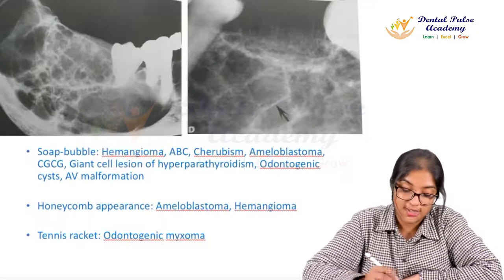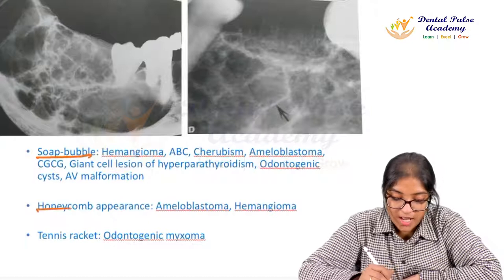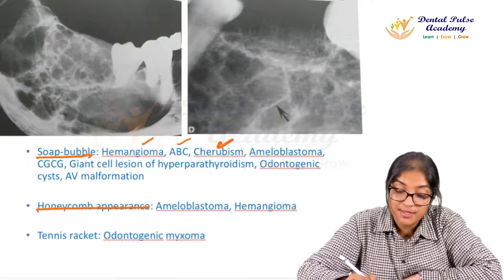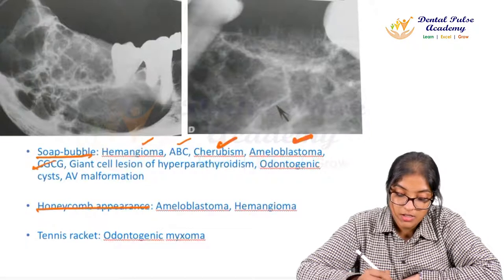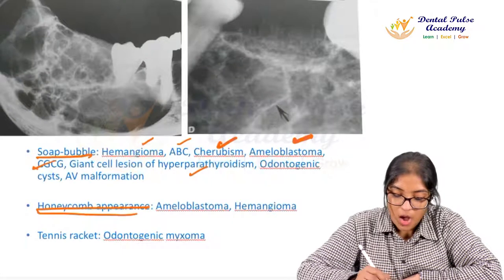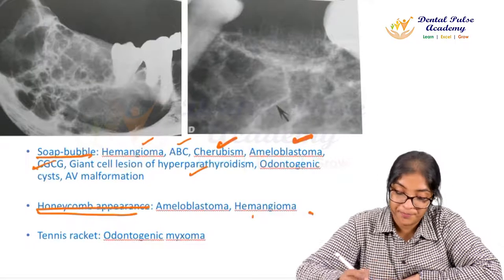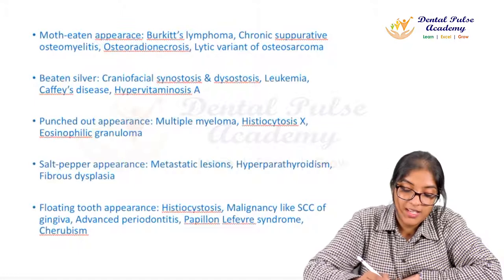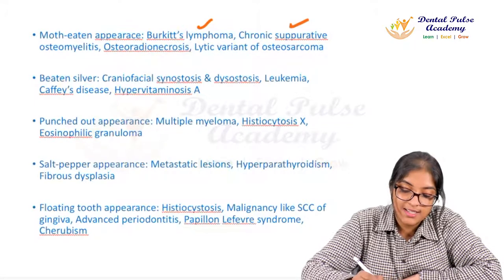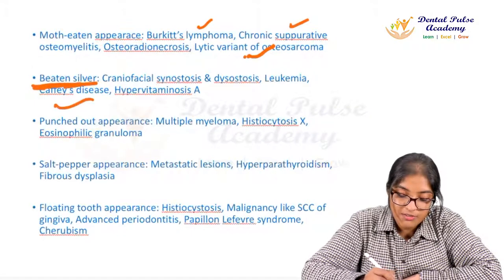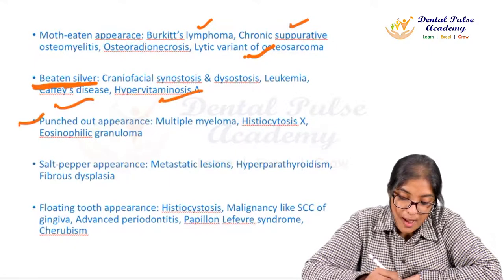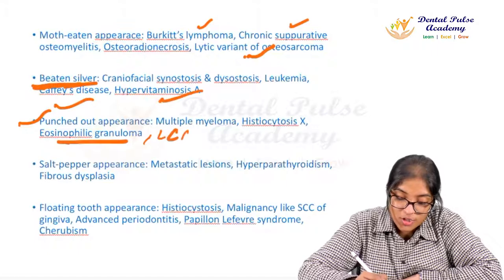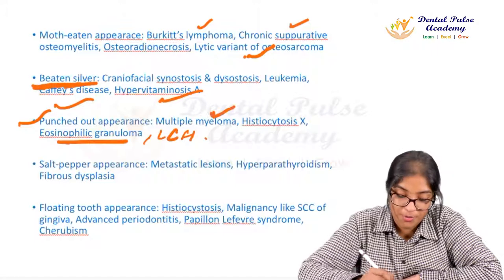Multilocular appearance patterns to remember: soap bubble appearance is seen in hemangioma, aneurysmal bone cysts, cherubism, ameloblastoma, central giant cell granuloma, and giant cell lesions of hyperparathyroidism. Honeycomb appearance is seen only in ameloblastoma and hemangioma. Tennis racket pattern is odontogenic myxoma. Moth-eaten appearance is seen in Burkitt's lymphoma, osteomyelitis, and osteosarcoma. Beaten silver is seen in Caffey's disease and hypervitaminosis A. Punched-out appearance indicates eosinophilic granuloma, Langerhans cell histiocytosis, or multiple myeloma.